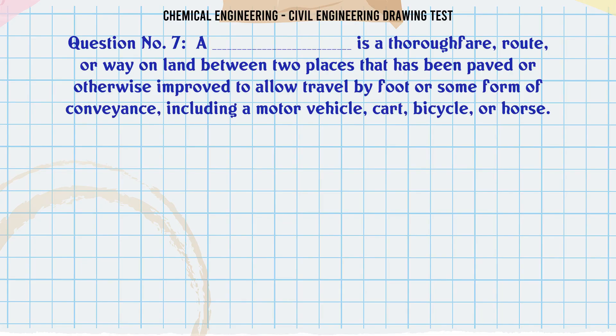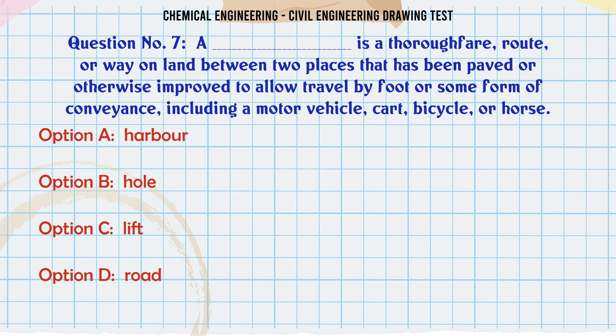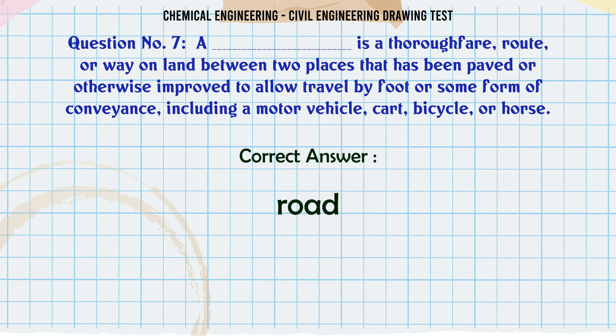A is a thoroughfare route or way on land between two places that has been paved or otherwise improved to allow travel by foot or some form of conveyance including a motor vehicle, cart, bicycle or horse. A. Harbour. B. Hole. C. Lift. D. Road. The correct answer is Road.